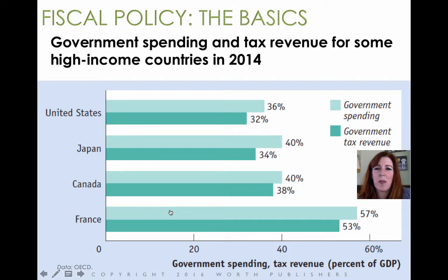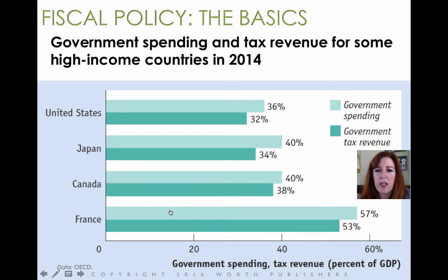Since fiscal policy involves government taxation and government spending, let's look at how the U.S. compares to other countries. On the horizontal axis, you see government spending as a percent of GDP — how much are we spending compared to the size of our total economy? The U.S. has 36% spending and 32% tax revenue, so we are running a deficit. Japan is in the same situation, as is Canada and France. France's deficit is about the same size as ours in terms of percent, but they do a lot more government spending and taxes.